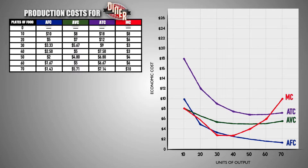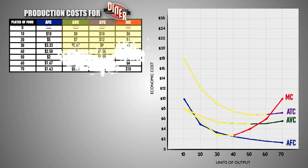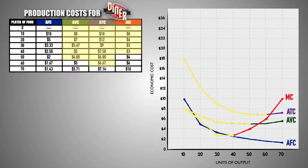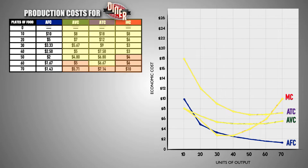This is due to the law of diminishing marginal returns. Initially, variable resources are more productive for the diner, meaning each unit of output they produce has a lower variable cost, leading to a lower marginal cost and total cost per meal. Then, as diminishing returns sets in, each additional variable resource is less productive than the last, causing the variable cost per unit of output to increase again, and driving up the marginal cost and total cost per meal.